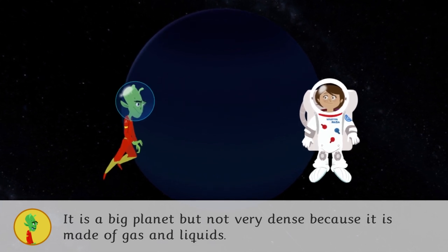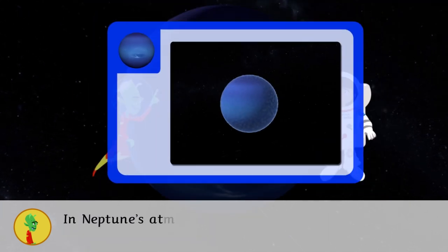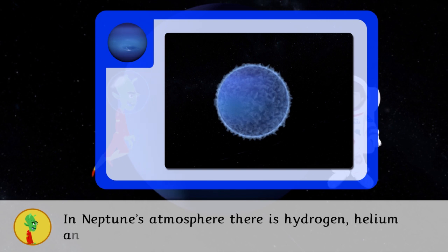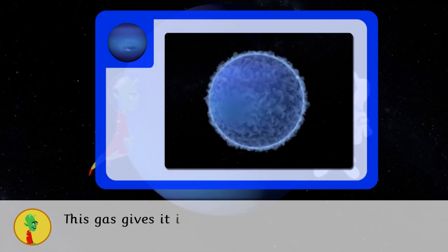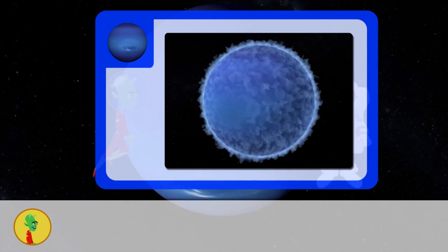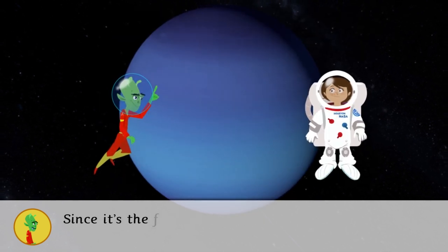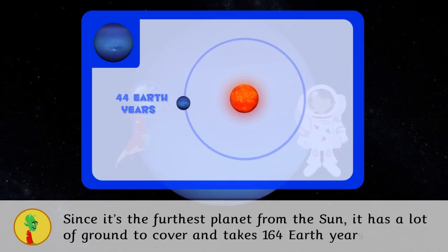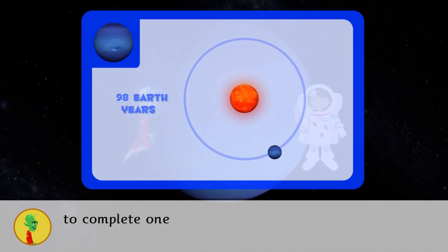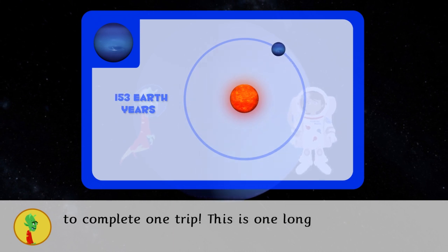In Neptune's atmosphere there is hydrogen, helium, and methane that can be used as fuel. This gas gives it its blue color. Since it's the furthest planet from the sun, it has a lot of ground to cover and takes 164 Earth years to complete one trip. This is one long year.